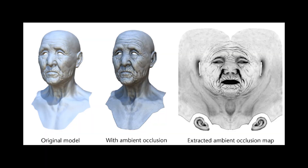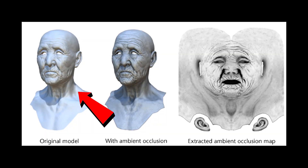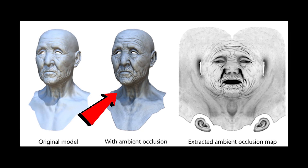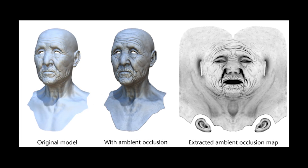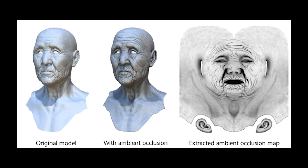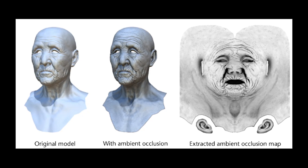But ambient occlusion is a more subdued technique that doesn't necessarily involve light direction. Here's an example. In this frame, the left model represents a scenario without AO, the right with. Both appear realistic, but the left model seems overexposed and lacks a bit of contrast.